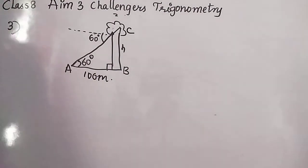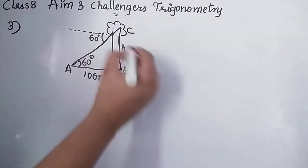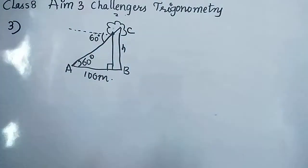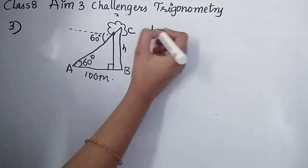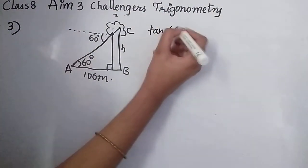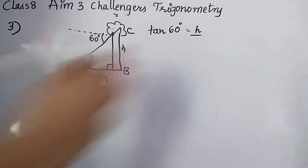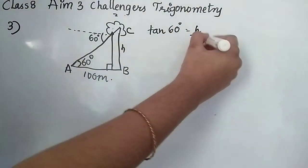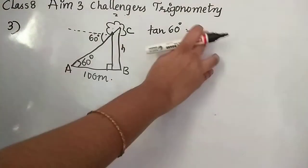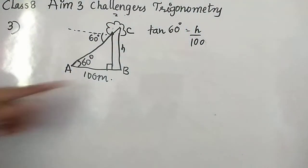Now we are going to take tan. Why? Because same thing again, opposite and adjacent. With these two links we have only tan. So tan 60 is equal to h by 100. Right, 100. No need to write degree. It's okay. Fine. Sorry, 100 meters. You should not even write degree.